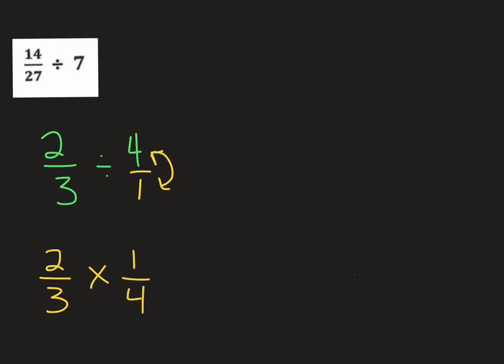Now we cross reduce, so we look here and it looks like 2 goes into both of them, so 2 divided by 2 is 1, 4 divided by 2 is 2, and if I do it the other way, it looks like I can't reduce 1 and 3.